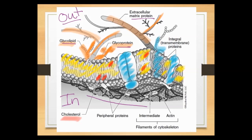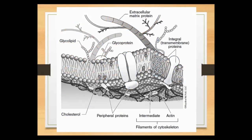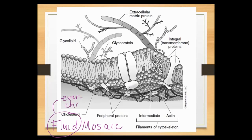We are going to study every piece of this membrane in detail, but there are two components we need to take a closer look at. The model we use in biology to describe the plasma membrane is called the fluid mosaic model — it describes both the structure and function of our membrane. The term 'fluid' here is not referring to liquid; it's talking about the fact that this membrane is ever-changing. Proteins can be installed or uninstalled, new phospholipids can be placed within or removed from the membrane, and new glycolipids can be made and built in.